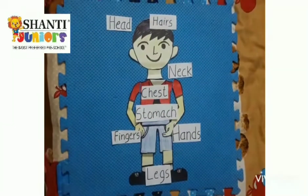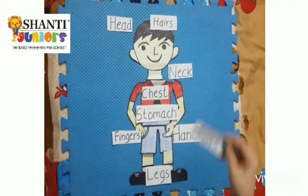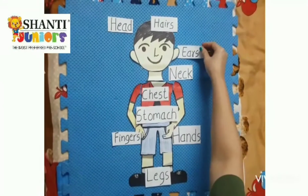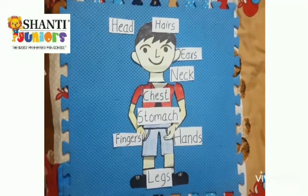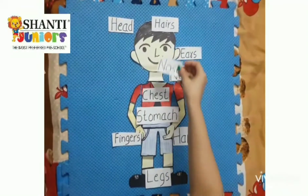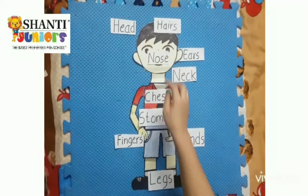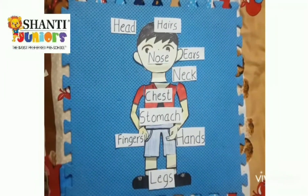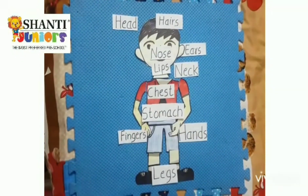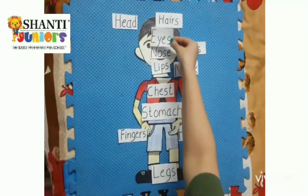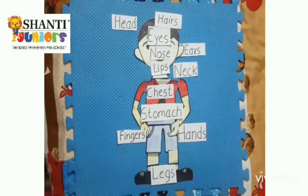You can also label the parts of the face as I have done — starting with ears, placing the nose label over the nose, lips, and eyes.